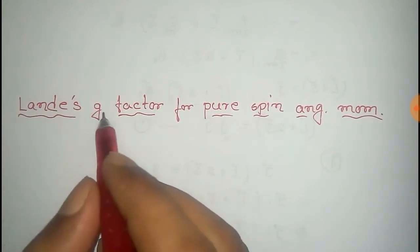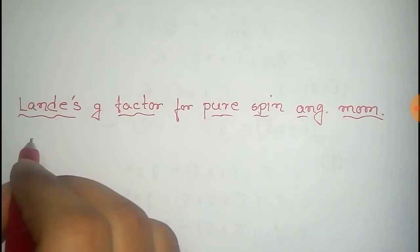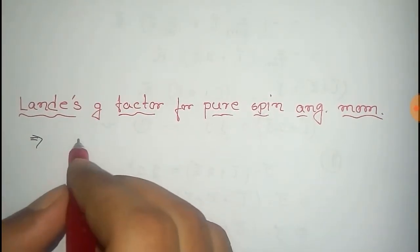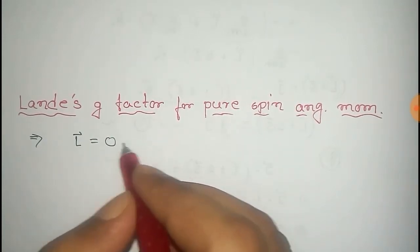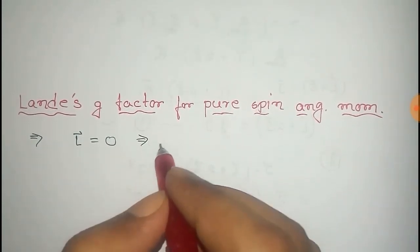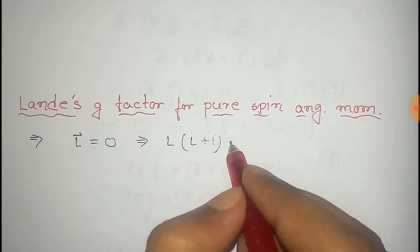In this video we will find the Landé g-factor for pure spin angular momentum. For pure spin angular momentum, the orbital angular momentum L vector would be 0, and its average value L into L plus 1 equals to 0.